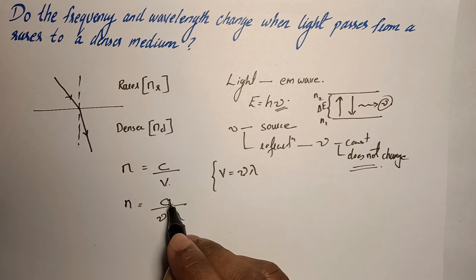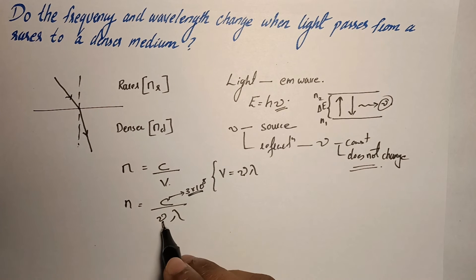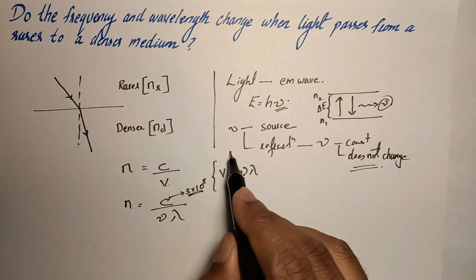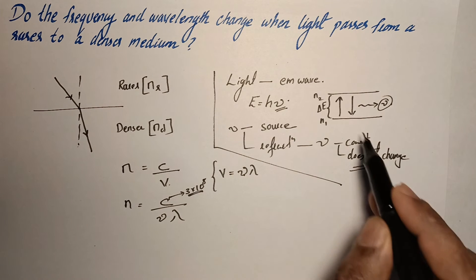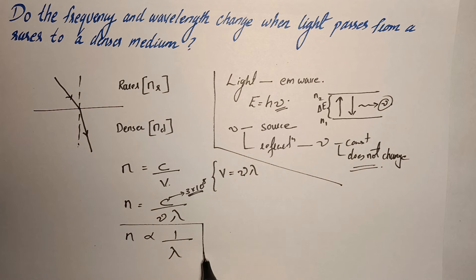We know that the value of c is 3 into 10 raised to 8 and that's a constant. And the frequency as we have already stated, it is a constant. So the wavelength depends on the refractive index or they are inversely proportional.